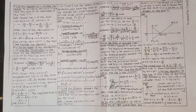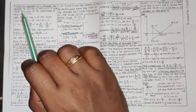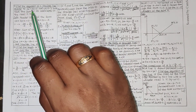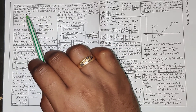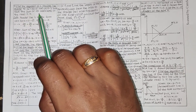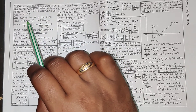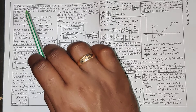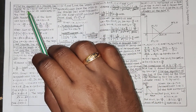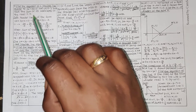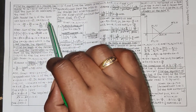Next, question number 9: find the equation of a straight line parallel to 2x plus 3y equal to 10, such that the sum of its intercepts on the axes is 15. The parallel line is of the form 2x plus 3y plus k equal to 0, or 2x plus 3y equal to minus k.